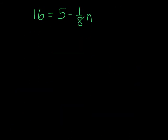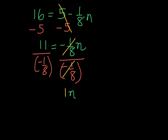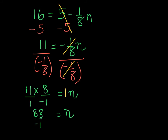The inverse operation we're going to perform here is to subtract 5 from both sides. On the right-hand side, that leaves negative 1/8 n — careful, don't lose the negative. And on the left-hand side, 16 take away 5 gives me 11. Now we can see that n is being multiplied by negative 1/8, so the inverse would be to divide by negative 1/8 on both sides. Anything divided by the same anything gives me 1 with n. On the left-hand side, 11 is being divided by negative 1/8, so I multiply by the reciprocal, which is 8 over negative 1. In the numerator I get 88, in the denominator negative 1, and this simplifies to give me negative 88.